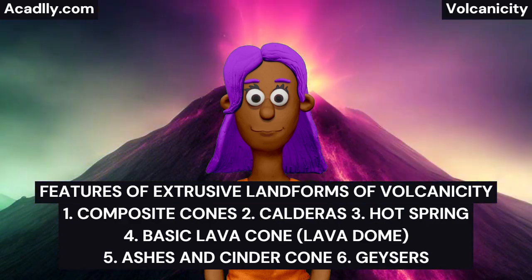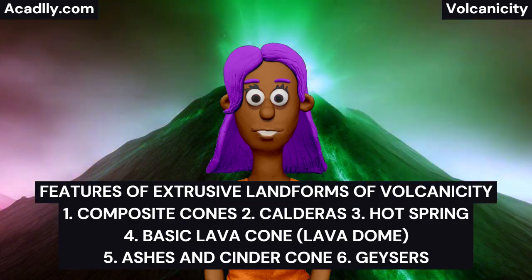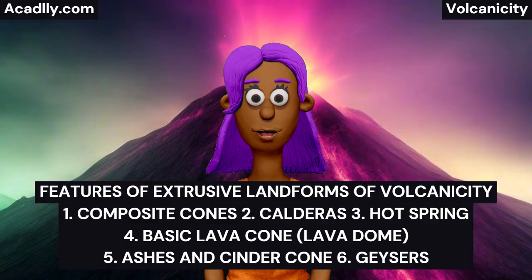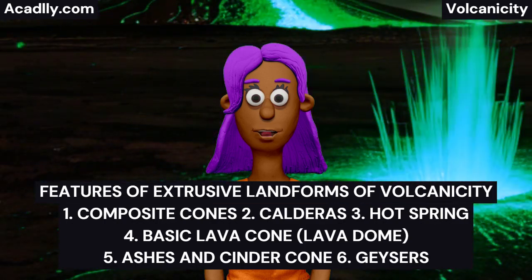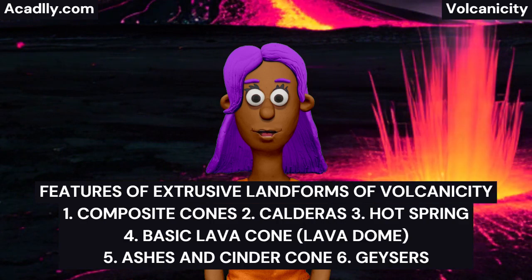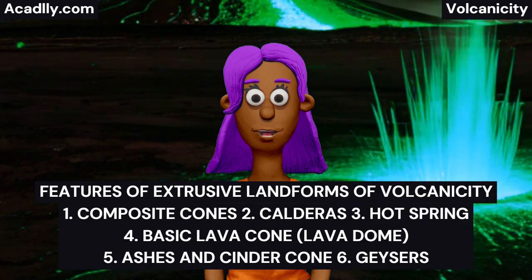Basic Lava Cone / Lava Dome: This is made up of very hot lava with a temperature of about 1000°C, and therefore is in liquid form. The lava flows for relatively long distances as soon as it pours out of the volcano. It flows out as thin mobile sheets of lava for great distances before solidifying. An example of this cone is Mauna Loa in the Pacific.